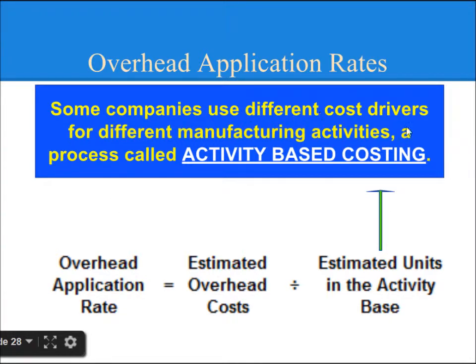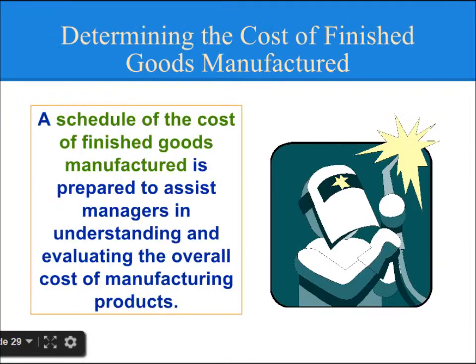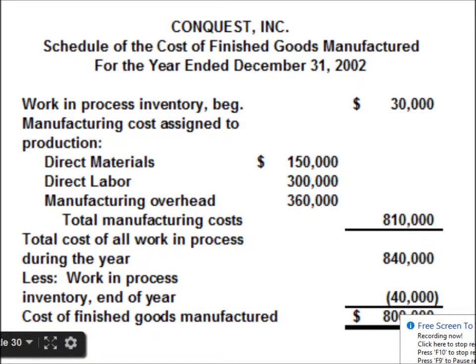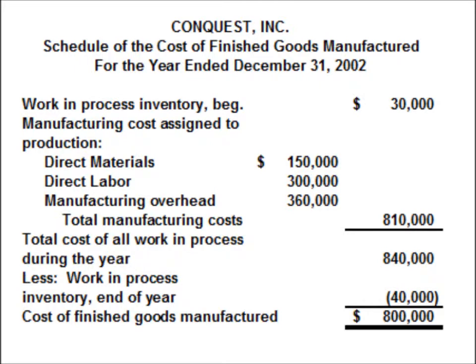Some companies use different cost drivers for different manufacturing activities, a process called Activity Based Costing. A schedule of Cost of Finished Goods Manufactured is prepared to assist managers in understanding and evaluating the overall cost of manufacturing products. Let's see an example to understand how to calculate Cost of Goods Sold to be added to the Income Statement.